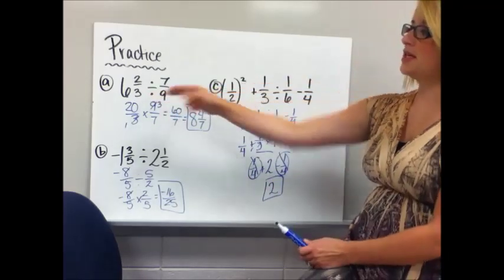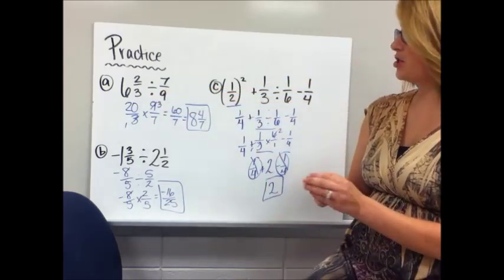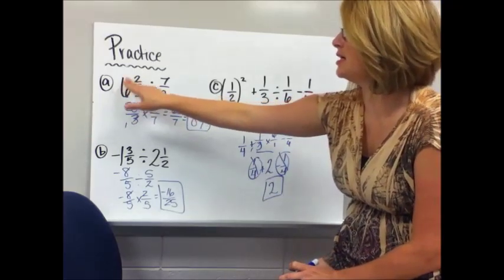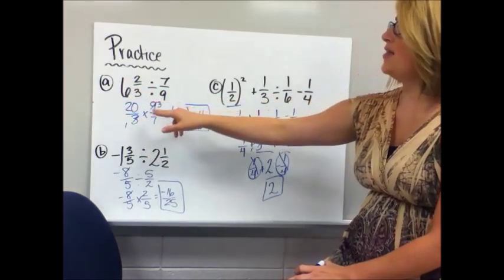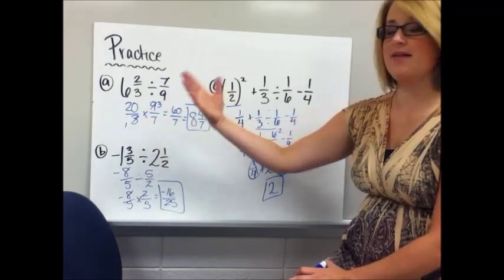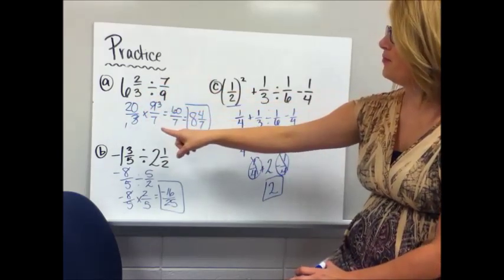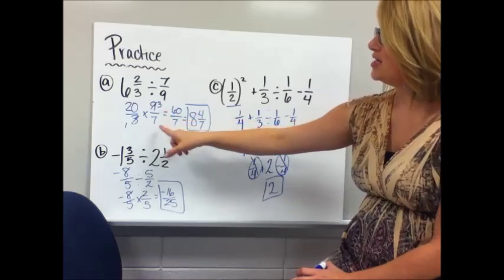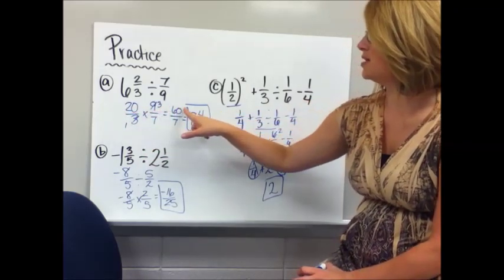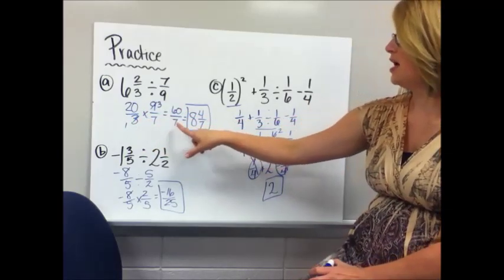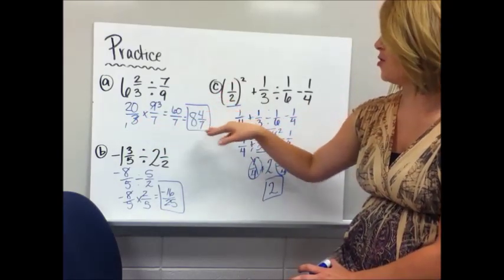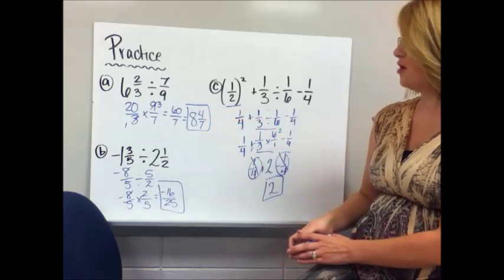For practice A: first turn 6 and 2 thirds into an improper fraction, which becomes 20 over 3, because 3 times 6 is 18, plus 2 is 20. Then keep it, change division to multiplying, and flip it. Cross-simplify the 3 and 9, which break down to 1 and 3. Multiply across: 20 times 3 is 60, 1 times 7 is 7. Then 7 goes into 60 eight times with 4 remaining, so the answer is 8 and 4 over 7.